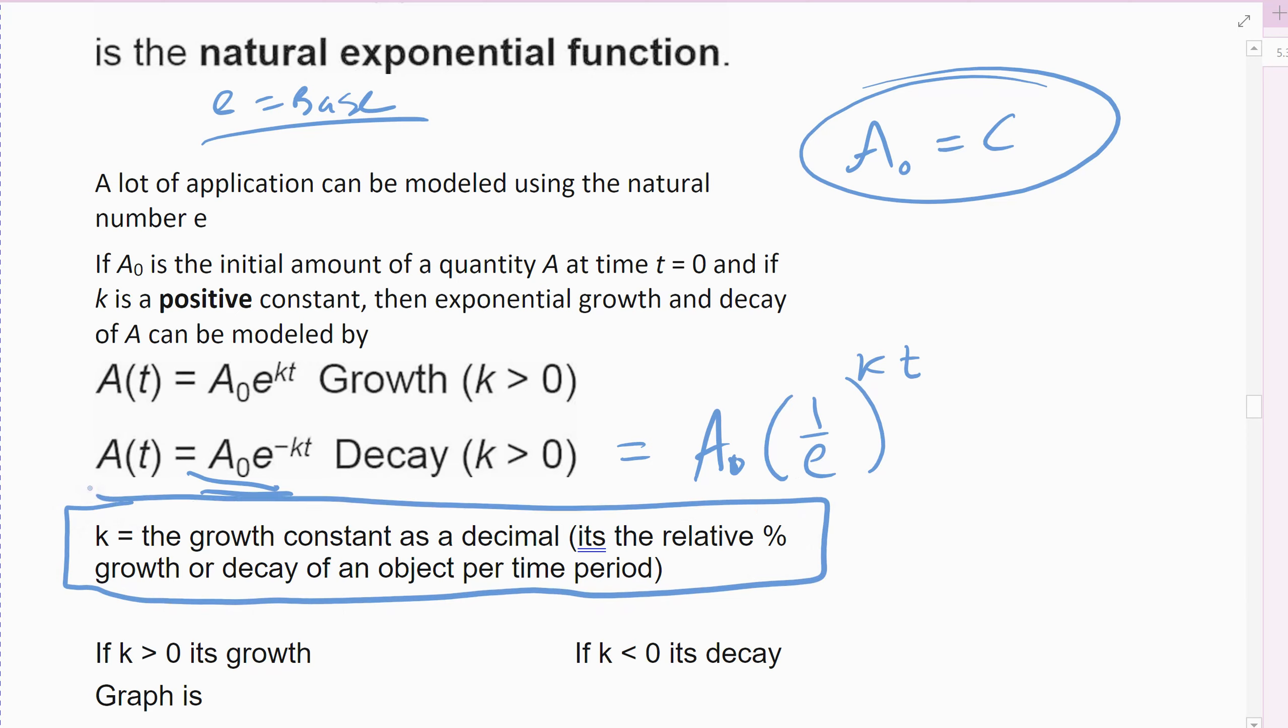K is very important. K is what's called the growth constant or the decay constant if it's a decay model. What it is, it's the relative percent growth or decay of an object over a period of time. So if the object grows by double every hour, it's growing by 100% of its size—that would be 1. If it's decaying by half its size, it'd be going down by 50%—that'd be a negative 50%.